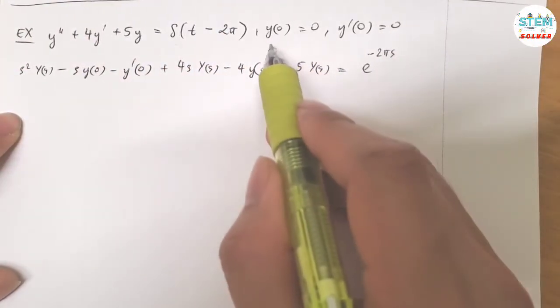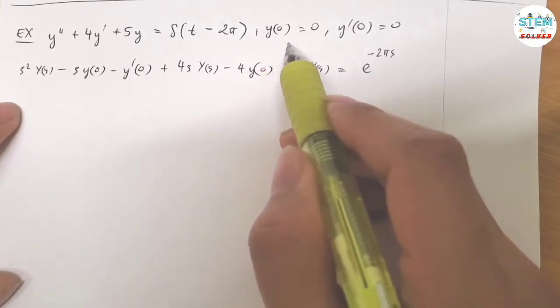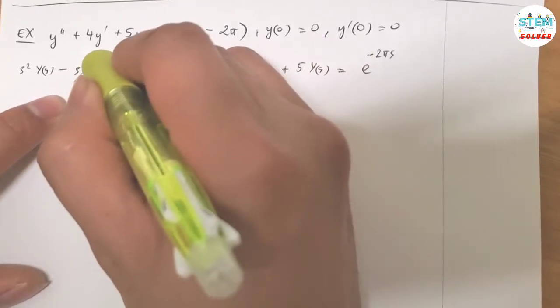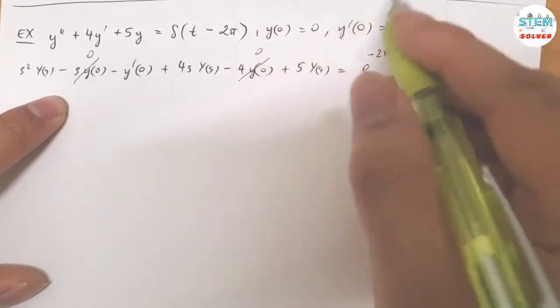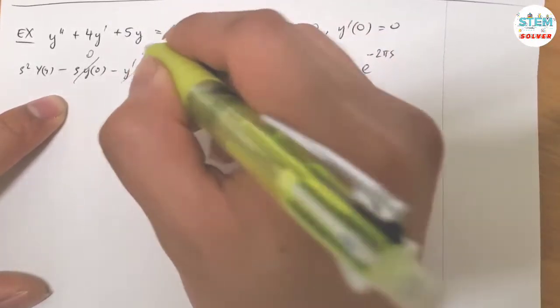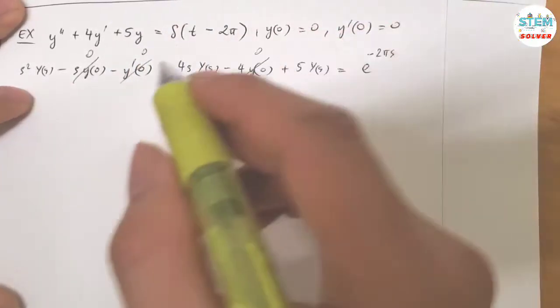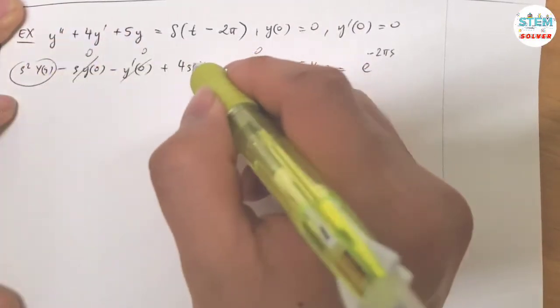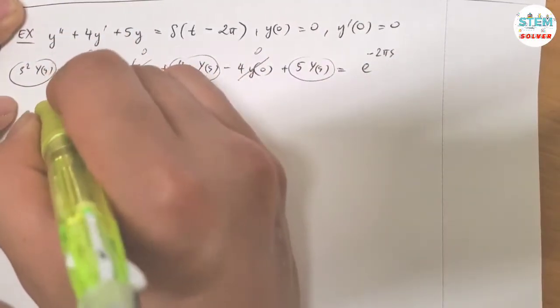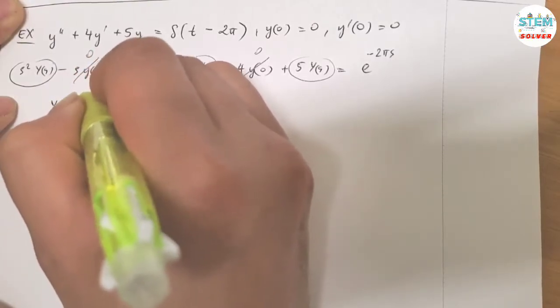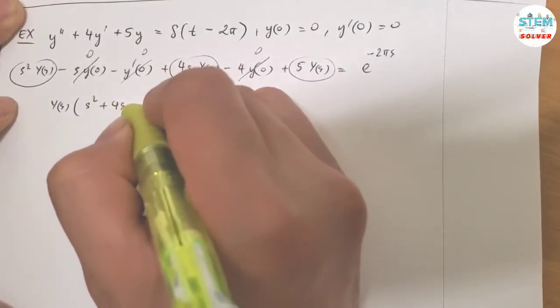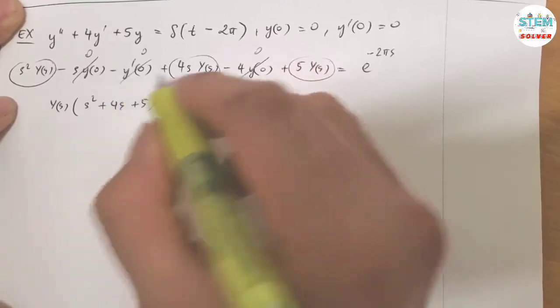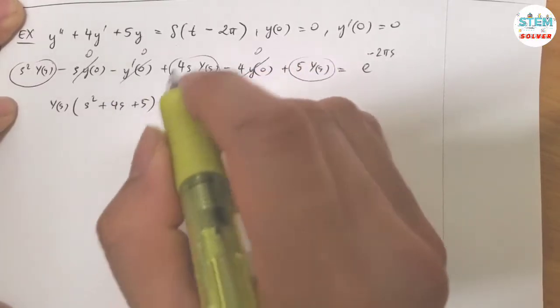Now look at the conditions: Y(0) equals 0, this is gone, this is gone. Y'(0) equals 0, so this is gone. So you're left with all capital Y of S's. Factored out, I have S² plus 4S plus 5 in parentheses equals e to the negative 2πs.